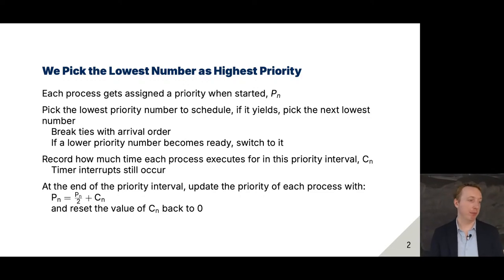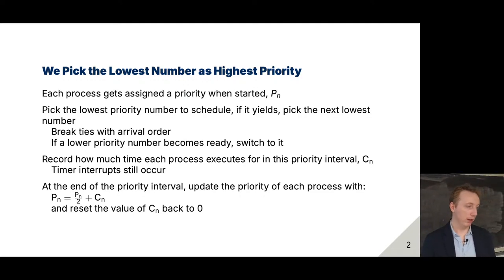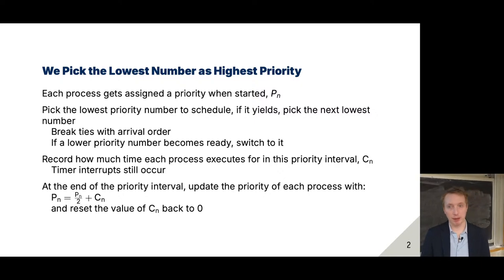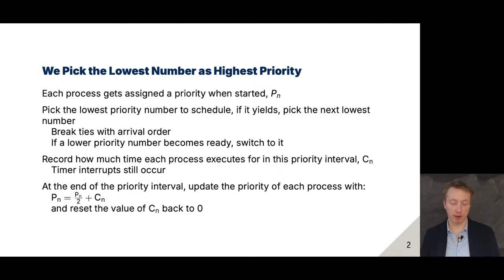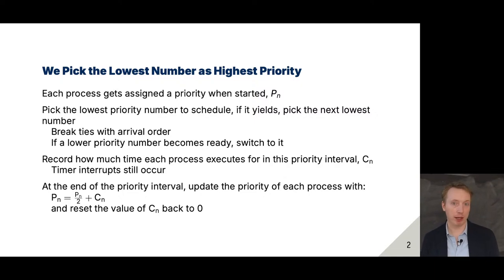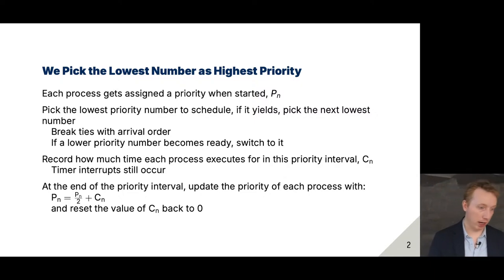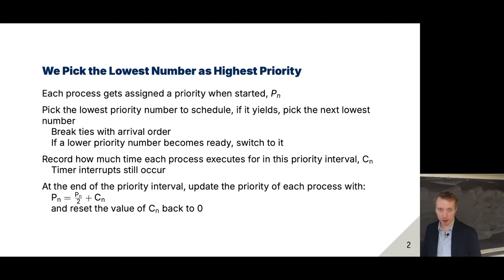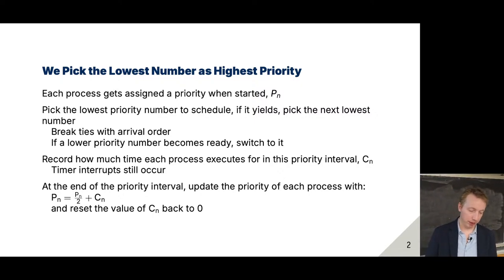For this scheme, we can pick the lowest number as having the highest priority. Each process gets assigned some priority when it starts — P subscript N — and the algorithm picks the lowest priority number to schedule. If that process yields and gives up its CPU time, we pick the next lowest number or next highest priority. Ties are broken by arrival order. If a lower priority number becomes ready, we immediately switch to it — so we have preemption. We have time units, so we can't switch within a time unit, but we can between them.